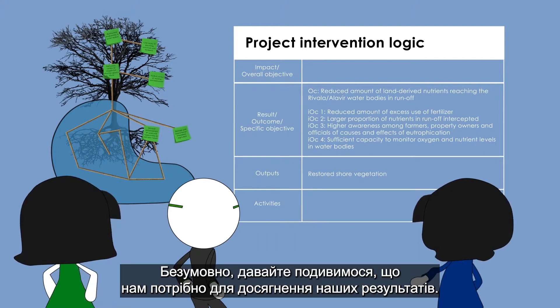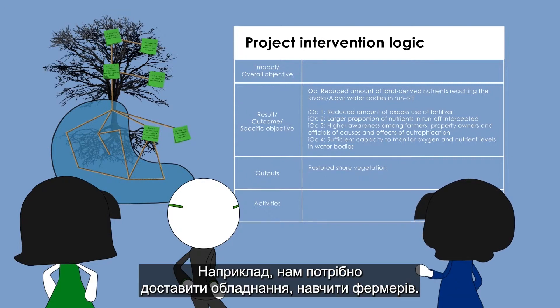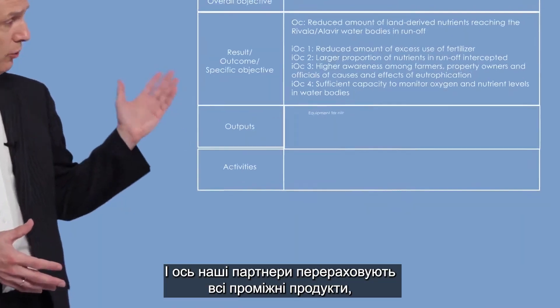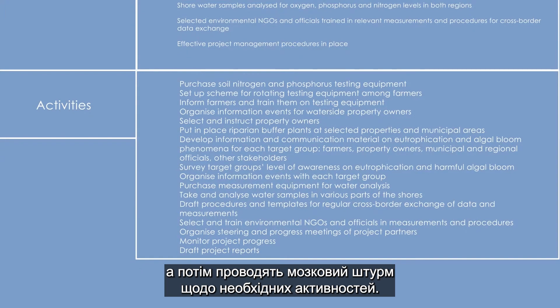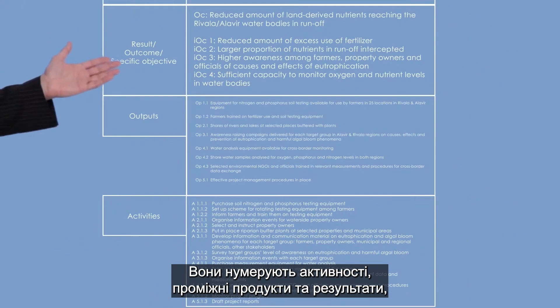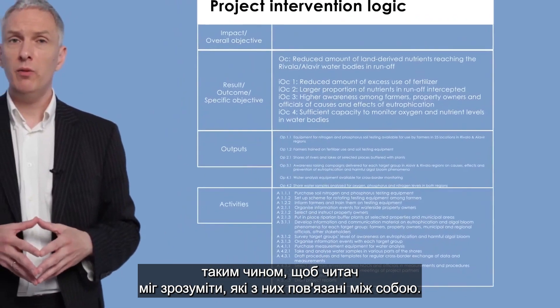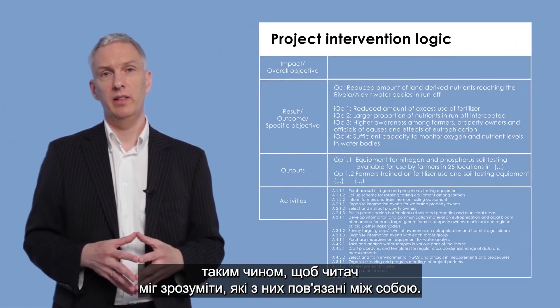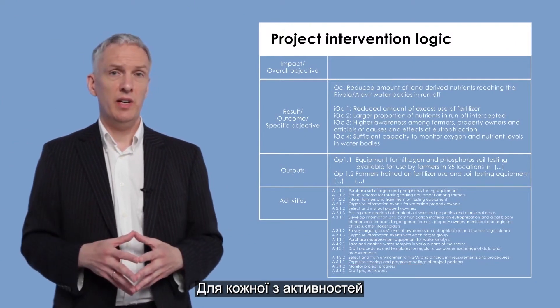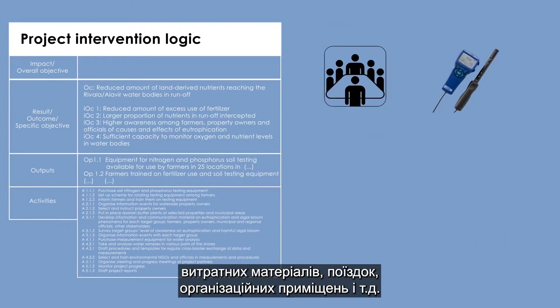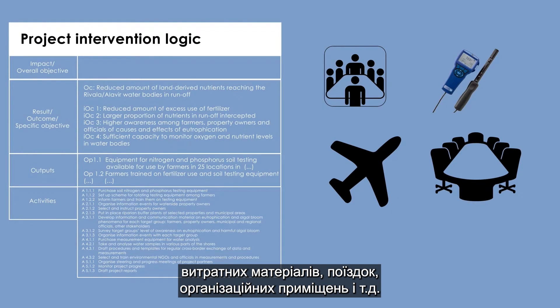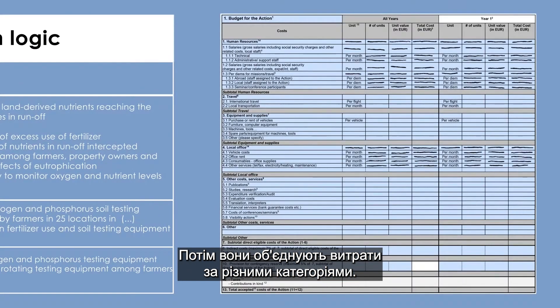The partners look at what is needed to achieve their results — for instance, equipment delivered and farmers trained. They list all the outputs and brainstorm the necessary activities, numbering activities, outputs, and results so the reader understands which ones belong together. For each activity, they brainstorm the inputs needed: staff, supplies, travels, organisational facilities, etc. They then combine the costs into different categories.